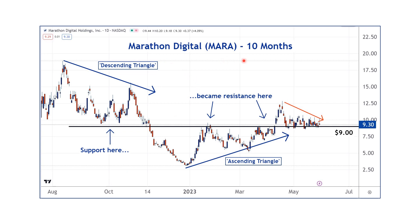There are a couple of things I want to show you here. One is, it's a very common thing in financial markets for a level that was support to convert into resistance, then the level that was resistance to convert into support. See this level — $9 support here, resistance here, support here.